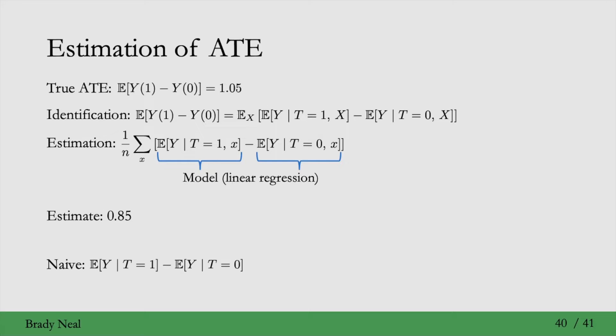In contrast, the naive estimate that we would get if we were to just regress Y on T, and then subtract those two modeled conditional expectations, would be 5.33. So recall that the true ATE is 1.05. This naive estimate is 407% off the true ATE. In contrast, our estimate is only 19% off when we adjust for X here.